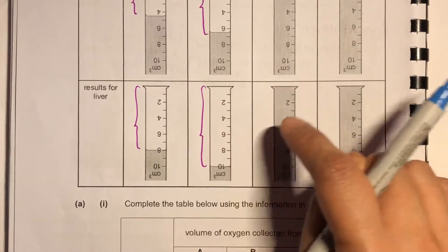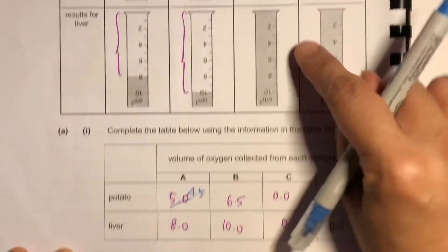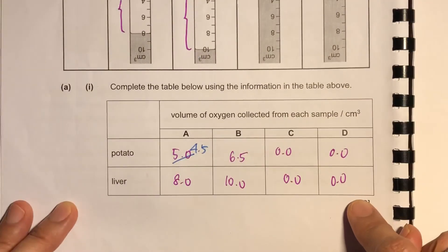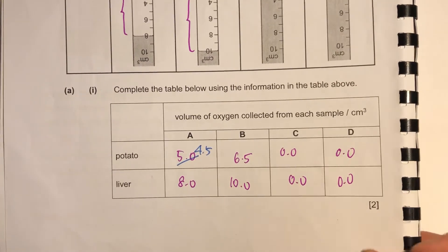Here is six. This is ten. And there's nothing. There's no oxygen here. So it's zero, zero. To one decimal place because that's the degree of accuracy for the measuring cylinder.